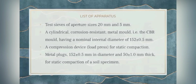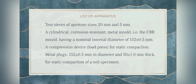The second apparatus is a cylindrical corrosion-resistant metal mold, the CBR mold, having a nominal internal diameter of 152 ± 0.5 mm. The mold shall be fitted with a detachable base plate and a removable extension collar. Third is a compression device, which is the load press for static compaction.